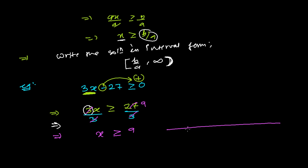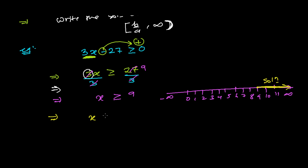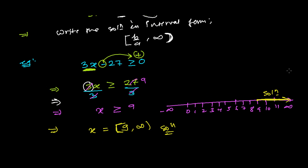On the number line, starting from 0 and going through 1, 2, ... up to 9, 10, 11, and so on to infinity, our solution is all numbers greater than or equal to 9 — so including 9 and all bigger numbers in the real number line. Writing in interval form, since there is an equals-to sign, we use a closed bracket: [9, ∞). This is the solution of 3X − 27 ≥ 0.